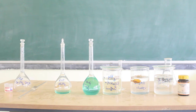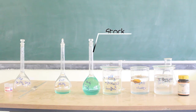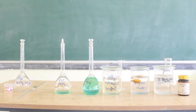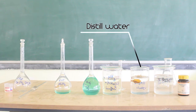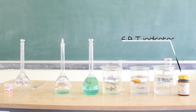Let us start the experiment. First, we need zinc sulfate crystals to standardize the zinc sulfate solution. Then we will be given a stock solution of nickel from which we have to estimate the amount of nickel present. We also need pH 10 ammonia ammonium chloride buffer, deionized or distilled water, EDTA solution of approximately 0.01 molar molarity, and the indicator we use is eriochrome black T indicator.